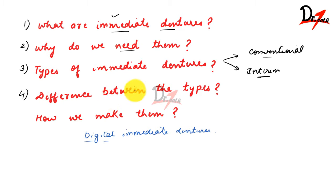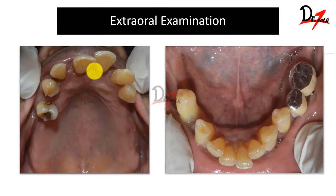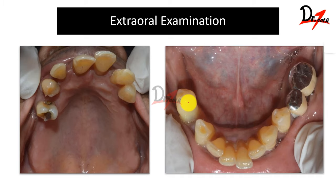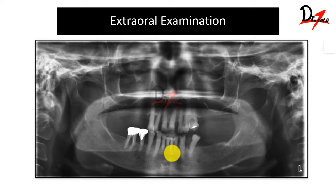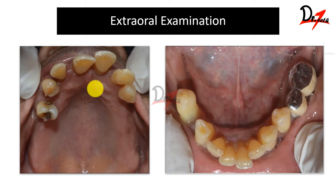I will explain both types with the help of a case. The patient presented with anterior teeth along with a premolar in the maxillary arch, and in the mandibular arch she had anterior teeth as well as some posterior teeth. Radiographic examination revealed poor prognosis with significant bone resorption. The patient was also unhappy with her aesthetics and wanted new teeth, making this a good case for immediate denture.